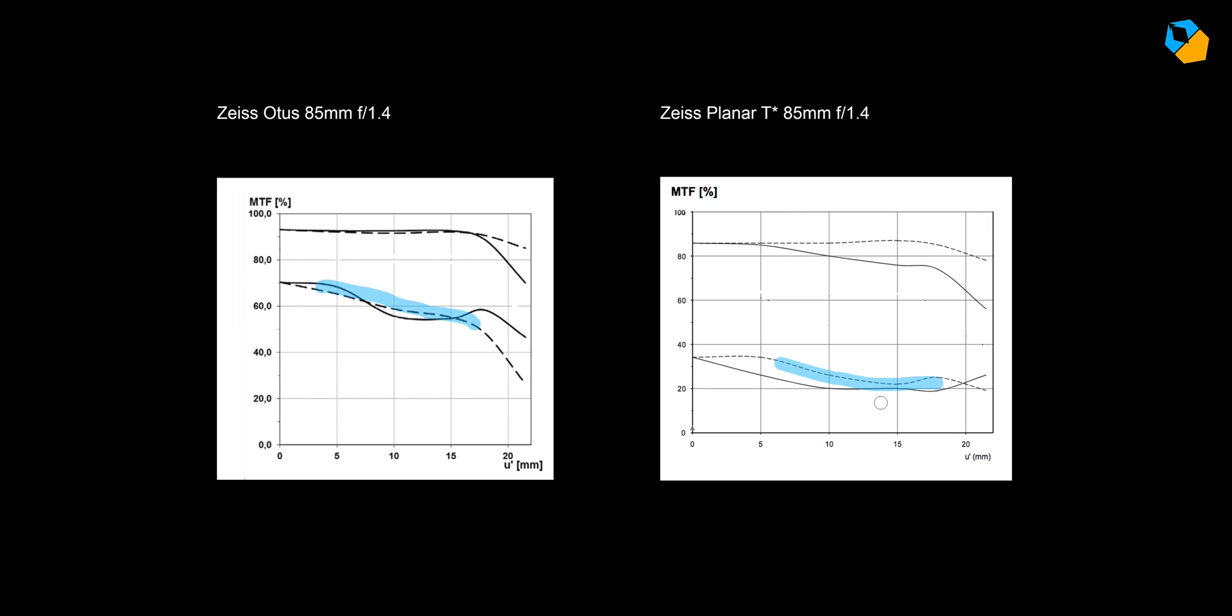If you look at the two MTF charts again, you'll see how well the planar does in relation to the Otis. Both have solid and dotted lines close to each other when wide open. The planar is slightly worse off, but it would be extremely hard to tell the difference in actual photographs without a side-by-side study. Many people praise the bokeh of the Otis, and you can see the two lines are as close as they'll ever be.